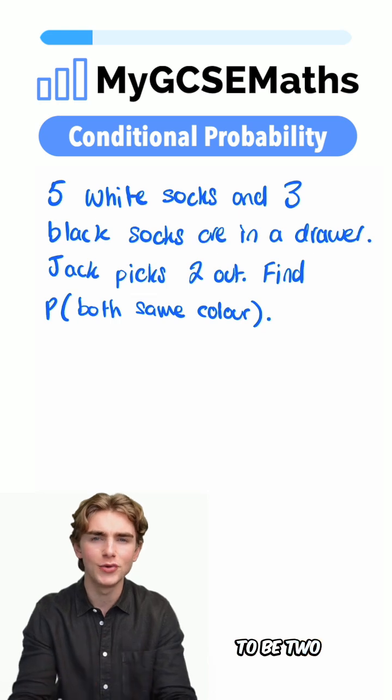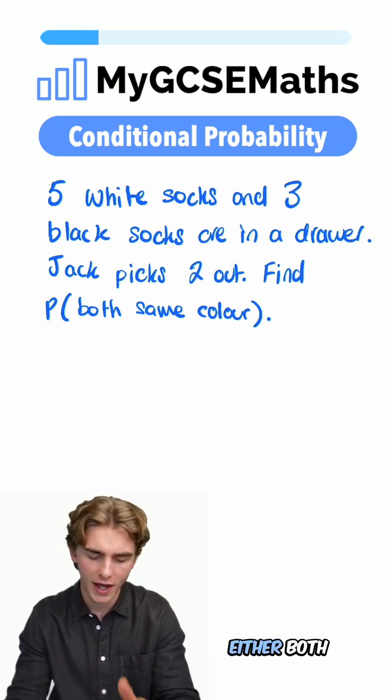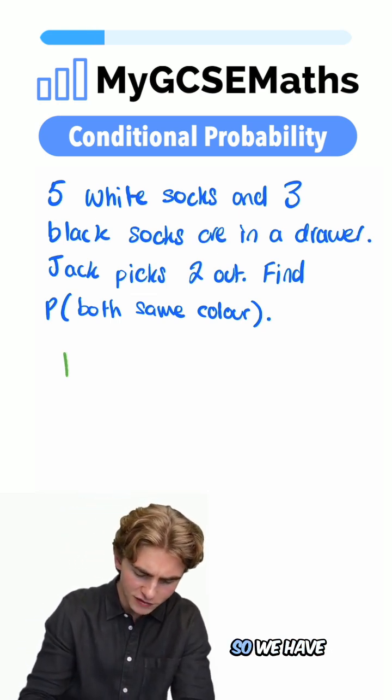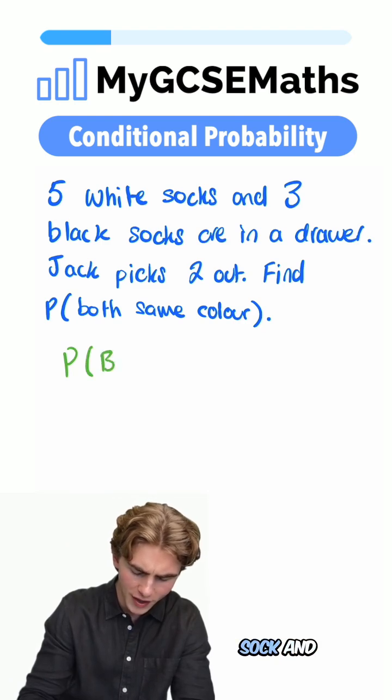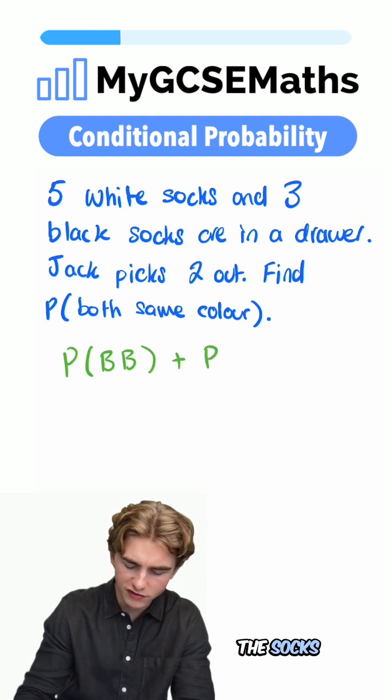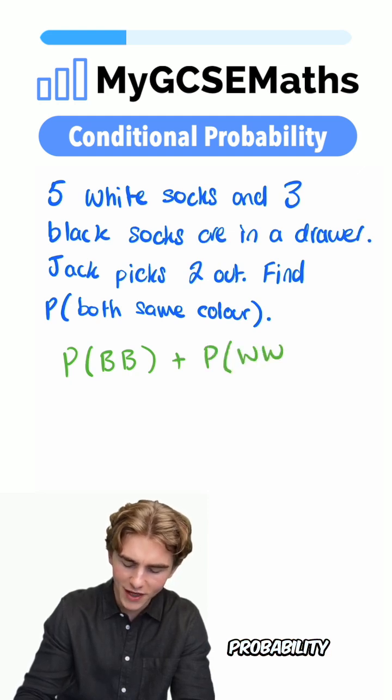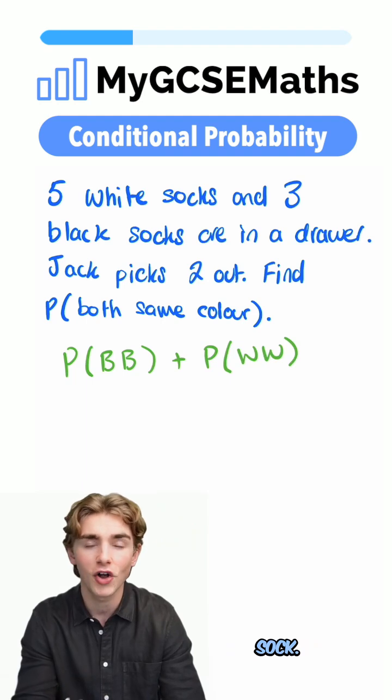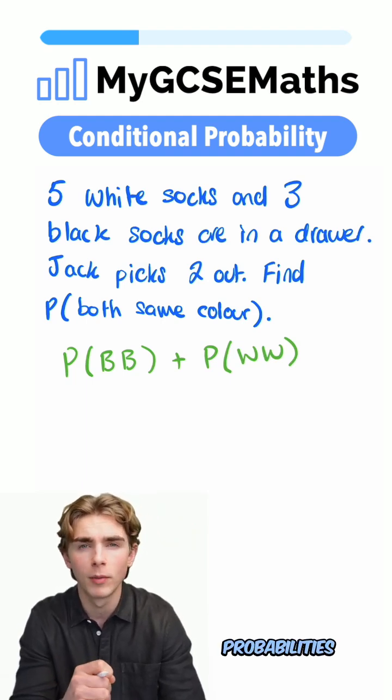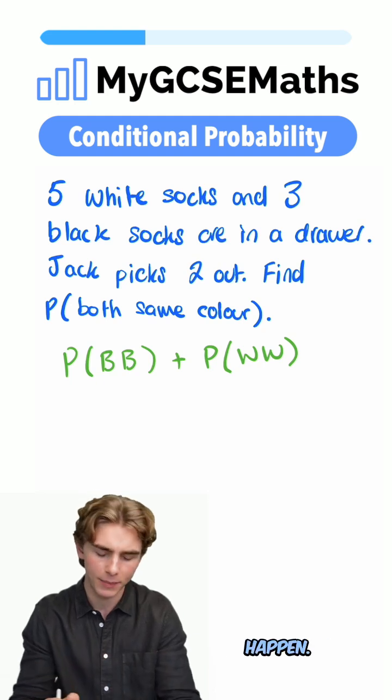Now, there are two different ways that they can be the same color. Either both socks are black, so we have the probability of getting a black sock and then a black sock, or both socks are white, so we have the probability of getting a white sock then a white sock. We're going to add both of those probabilities because either one can happen.